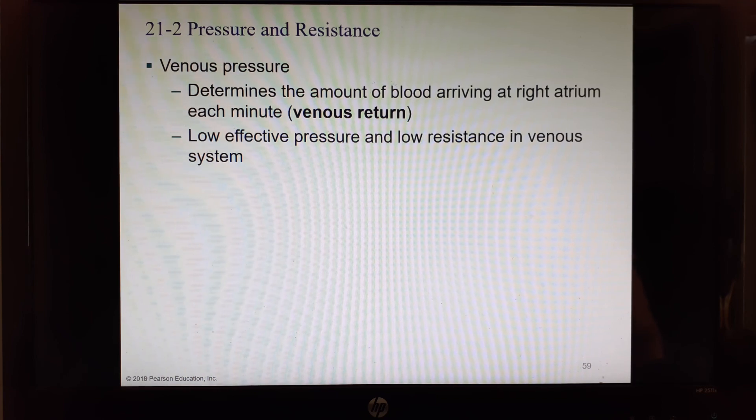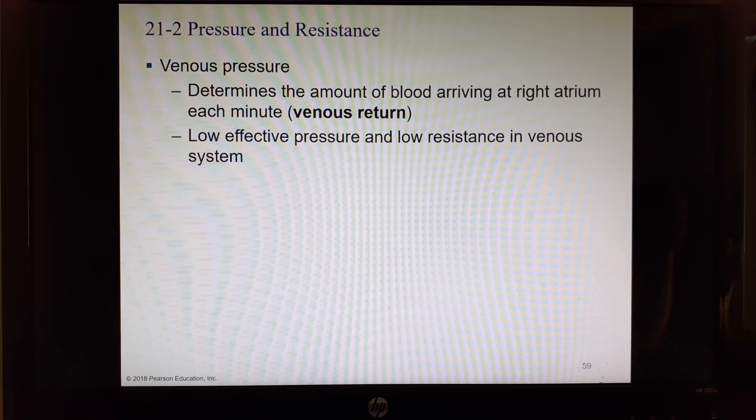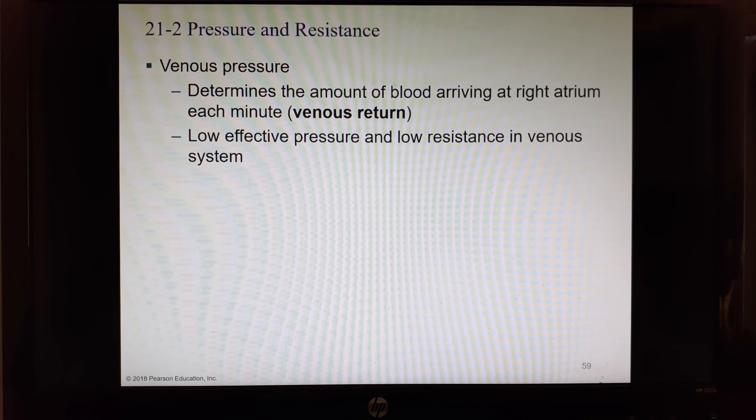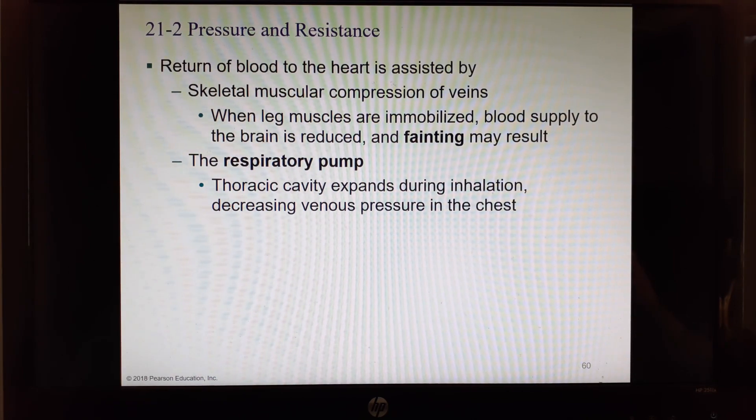Venous pressure. Now we do have blood pressure in the veins, although we don't have anything being driven by the heart, we still have fluid. The amount of venous pressure determines how much blood gets back into your heart in each venous return, how much goes into the right atrium between heartbeats. There is a low effective pressure and low resistance in your veins. Veins are wide and floppy, large diameters. We try to reduce resistance as much as possible. We use our skeletal muscles to compress to serve as our pump since we no longer have the pressure from the heart.